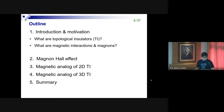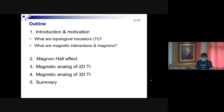Here's the outline of my talk. In the first part, I'm going to give some introduction and motivation. Jason already talked about topological insulators, but let me quickly run through what topological insulators are. Then I'm going to explain what magnetic interactions and magnons are. The second part reviews the magnon Hall effect, and the third and fourth parts are the main parts, introducing magnetic analogs of two-dimensional and three-dimensional topological insulators.